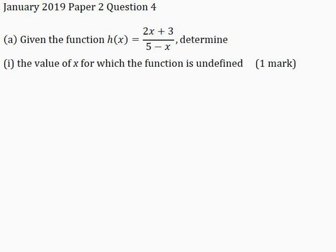h of x is undefined when its denominator is equal to 0, since you cannot divide any quantity by 0. So I'll take the denominator, 5 minus x, and place it equal to 0, and make x the subject of the formula. This gives 5 is equal to x, so x is equal to 5. Therefore, the function is undefined when x is equal to 5.